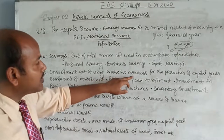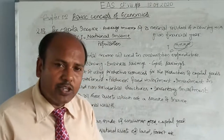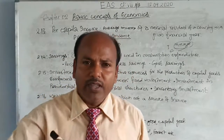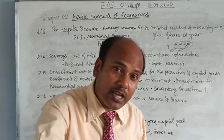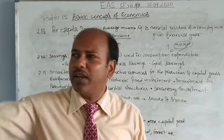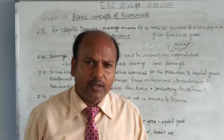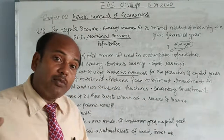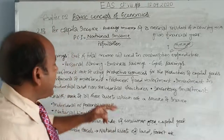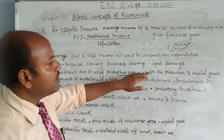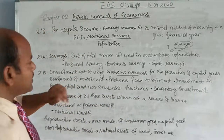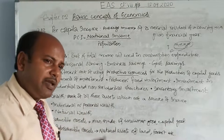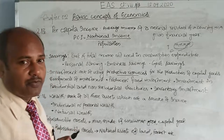Next is investment. Investment is the act of using productive resources for the production of capital goods. Productive resources are those resources with the help of which you can produce further in the economy. For example, if I invest my money and construct a building where production will take place, that building becomes a productive resource. All the money used for that purpose is called investment. One component is producer's fixed investment — the producer uses money that remains for a long time, not for short duration.